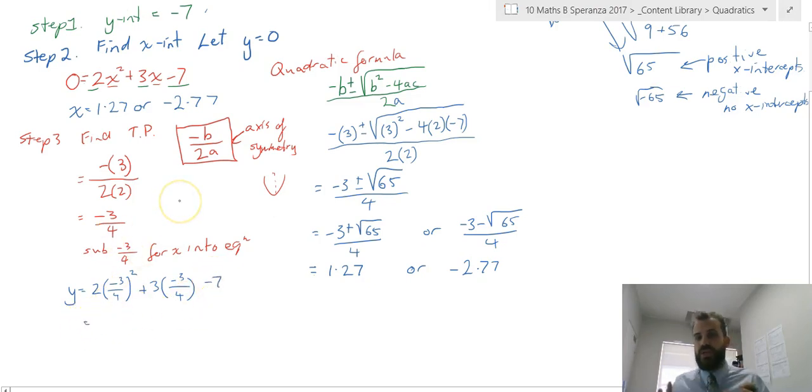Our equation is y equals 2 times negative 3 on 4 squared plus 3 times negative 3 on 4 minus 7. You can type it directly into your calculator looking just like that, and it should spit out an answer for us.